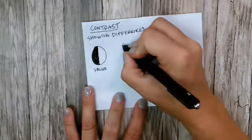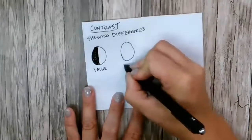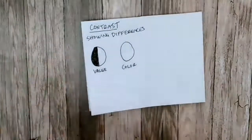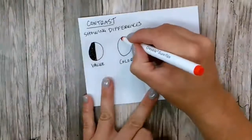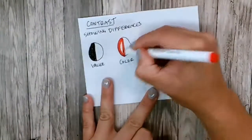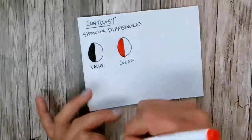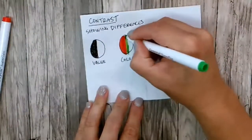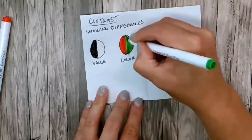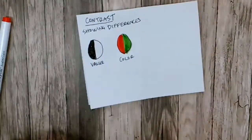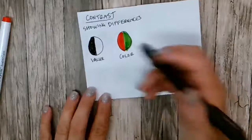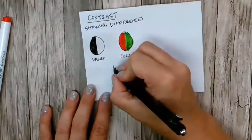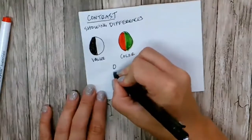You could have a contrast of color. And contrasting colors are like red and green, blue and orange, yellow and purple. So think almost like opposites. You could have a contrast of size. You could have a little egg, and a big egg.